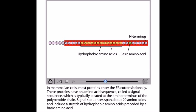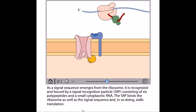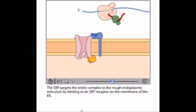As the signal sequence emerges from the ribosome, it is recognized and bound by a signal recognition particle which is SRP consisting of six polypeptides and small cytoplasmic RNA. Now the SRP binds to the ribosome as well as the signal sequence and in so doing stalls the translation process.